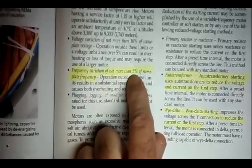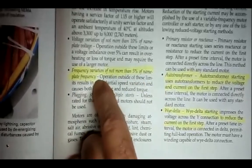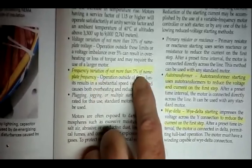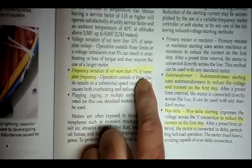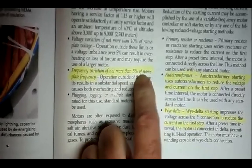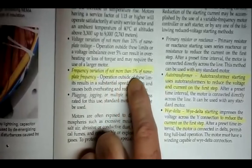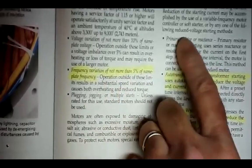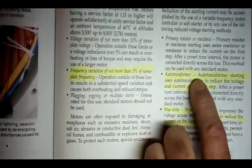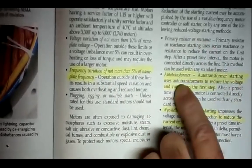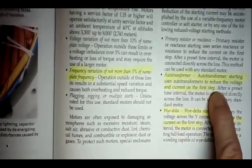frequency variations of not more than 5% of the nameplate frequency. So if it says 60 hertz, you shouldn't be less than 57 hertz. You shouldn't be more than 63 hertz, 5% of nameplate frequency. And then starting configurations. We have primary resistor or reactants starting. We have autotransformer starting. Autotransformer starting uses an autotransformer to reduce the voltage and current on the first step.